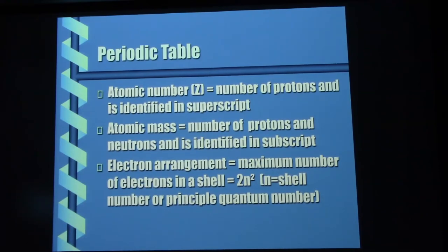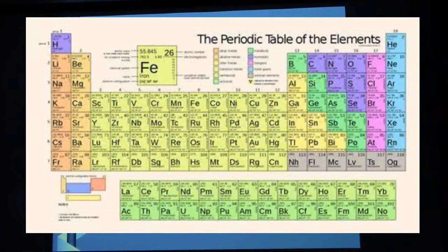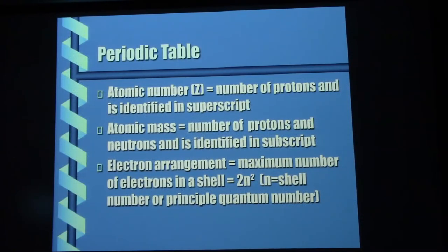The atomic number is also known as the Z number — that is the straight-up number of protons in that element, identified in superscript. The atomic mass is a combination — it's the number of protons and neutrons, identified in subscript on the periodic table. Remember, the number of electrons is always the same as the number of protons. So beryllium has 4 protons — how many electrons? 4. Tungsten has 74 protons — how many electrons? 74.